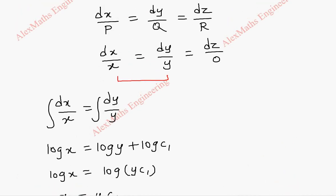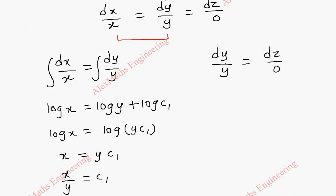Now we are going to take another two terms. Let's take the second and third. So dy by y equal to dz by 0. Now taking this 0 to the other side, this becomes 0 into dy by y equal to dz.